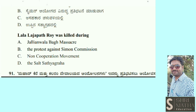All members of the Simon Commission belonged to Britain, which is why all Indians opposed it. The Jallianwala Bagh massacre took place in 1919. The Non-Cooperation Movement started in 1920 and ended with the Chauri Chaura incident. The Salt Satyagraha was in 1930, when Mahatma Gandhi marched from Sabarmati Ashram to Dandi.